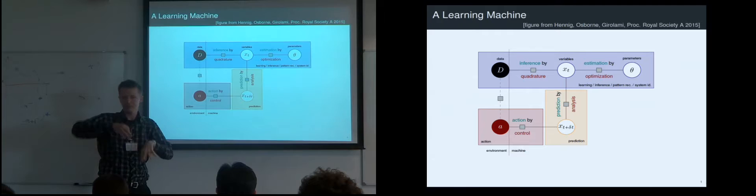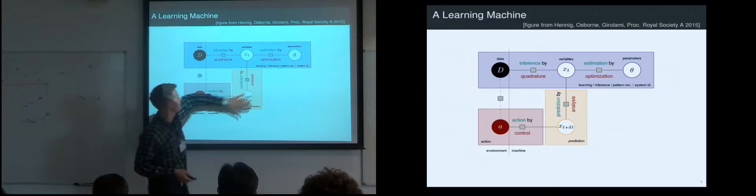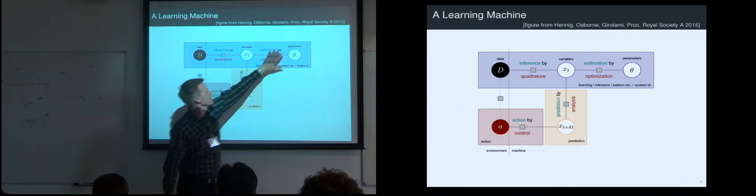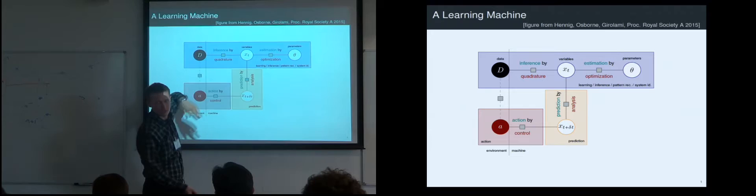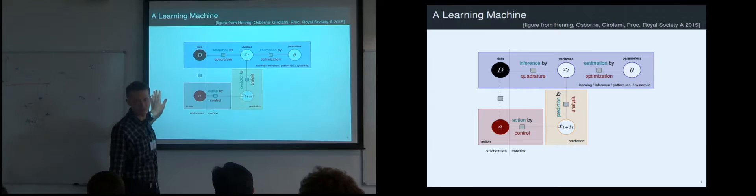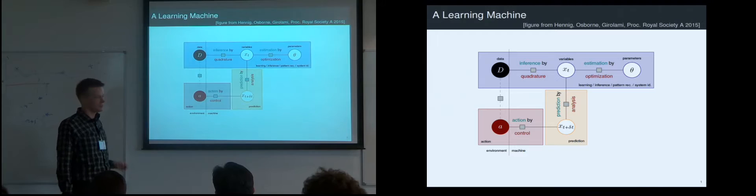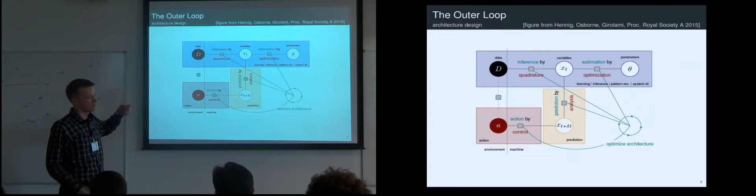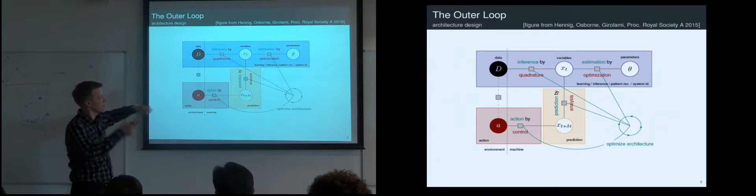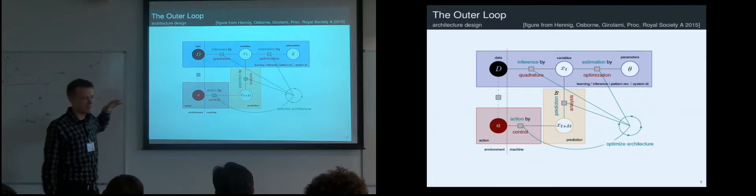Sometimes we have machines that don't do any of this and only have parameters — maybe they just train a neural network. Or sometimes machines don't have parameters and just train a GP returning probability distributions. Sometimes machines only make predictions and don't choose anything. The point of this cartoon is to point out the kinds of computation we're performing: integration, optimization, solving differential equations, and control, which is optimization of differential equations. Linear algebra is also included as a special case.